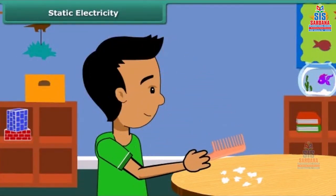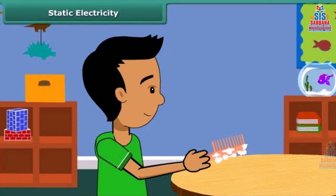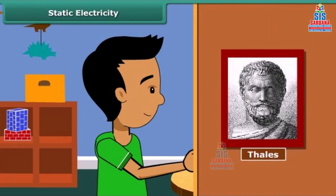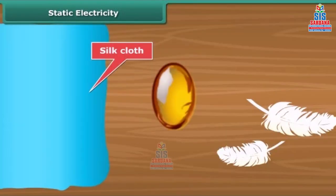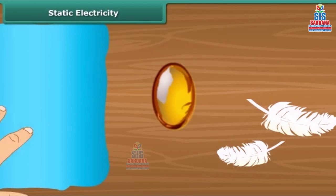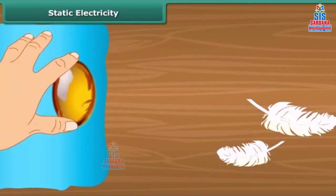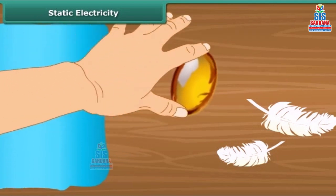When we comb our hair with a plastic comb and take it near small pieces of paper, the paper pieces are attracted toward the comb. We then say that the comb is charged with electricity. This was first noticed by a Greek man named Thales over 2500 years ago. He found that amber attracted tiny feathers after it was rubbed with silk cloth.